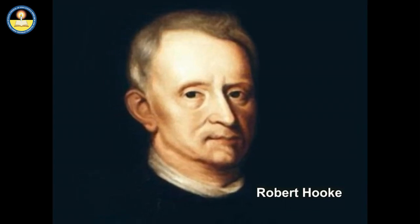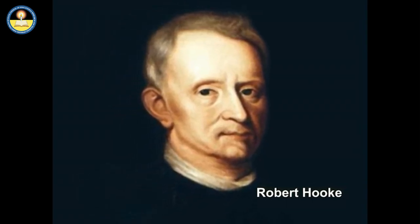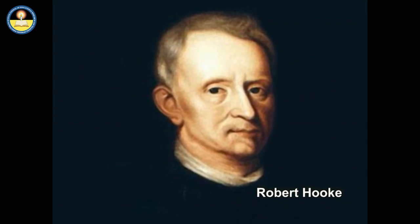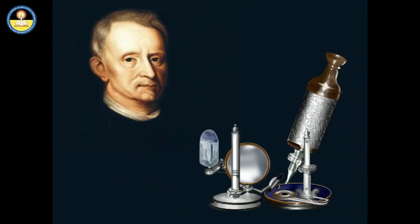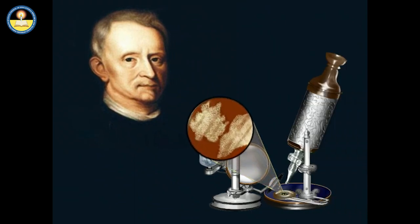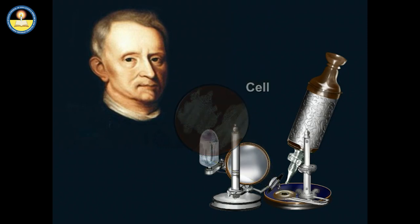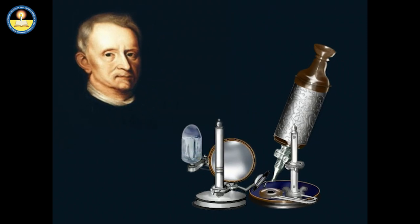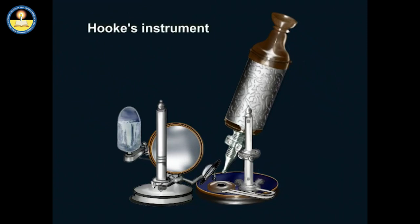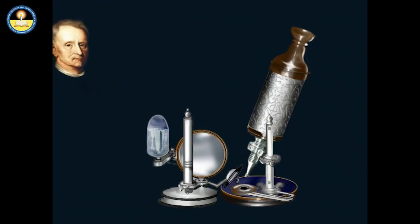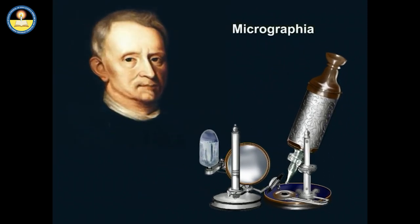In 1665, an English scientist, Robert Hooke, was the first person to use the word 'cell' after identifying pore-like microscopic structures in a cork. The microscope used by Robert Hooke is popularly known as Hooke's instrument. He wrote Micrographia, the first book describing observations made through a microscope.